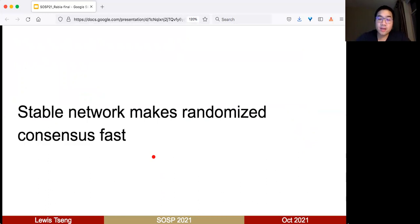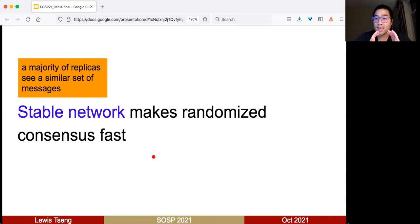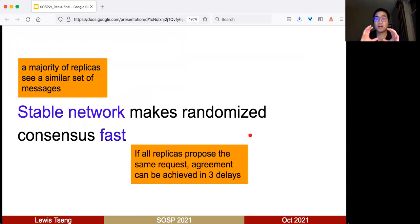Our first observation or contribution is that stable networks can make randomized consensus fast. In fact, in our design, we can create a case where if all replicas propose the same request, agreement can be achieved in three delays. In our evaluation, most of the time—more than 98% of the time—we use this fast path. That's how we achieve very good performance.